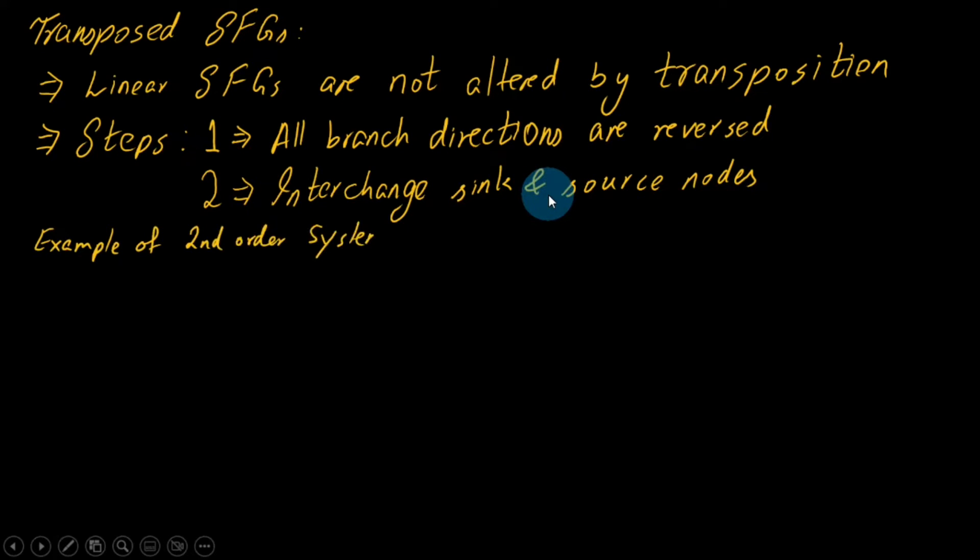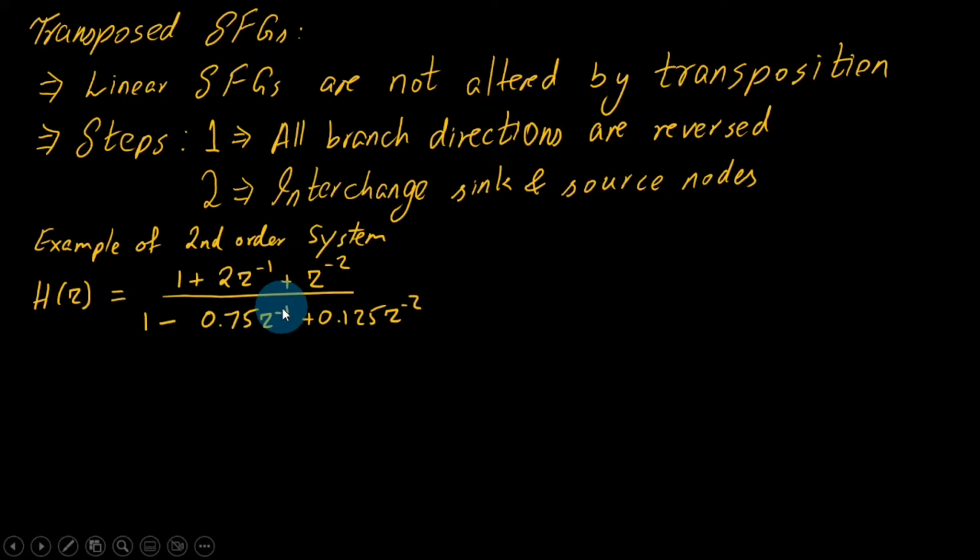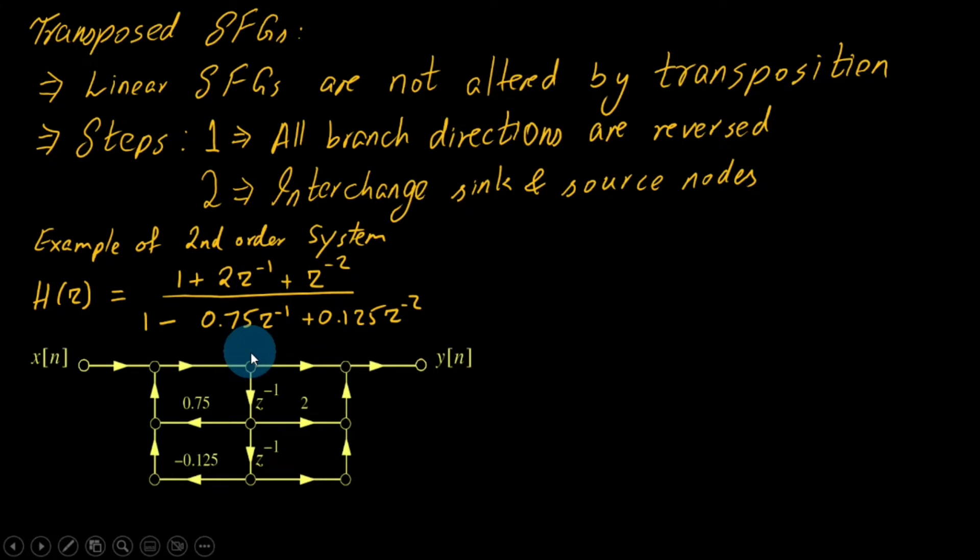The transfer function is given by: in the numerator we have 1 + 2z^(-1) + z^(-2), and in the denominator we have 1 - 0.75z^(-1) + 0.125z^(-2). It's straightforward to draw the Type 2 direct form.